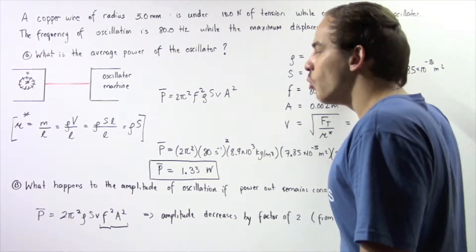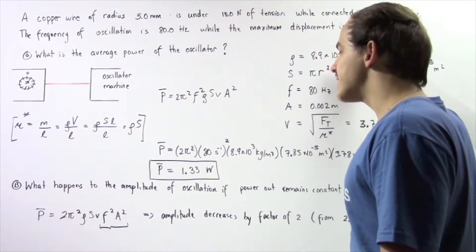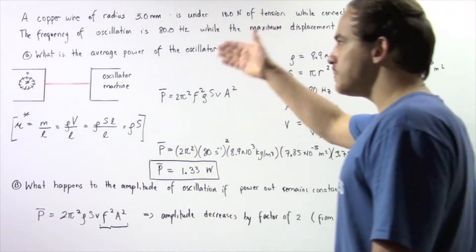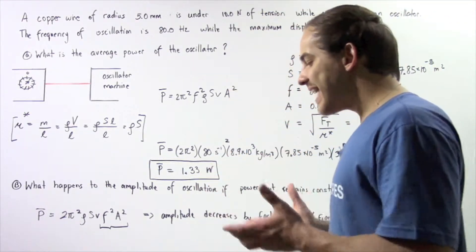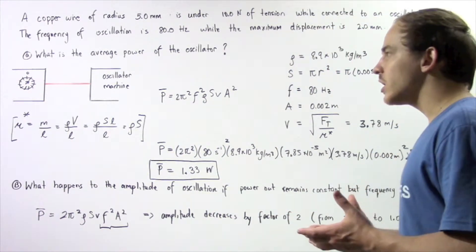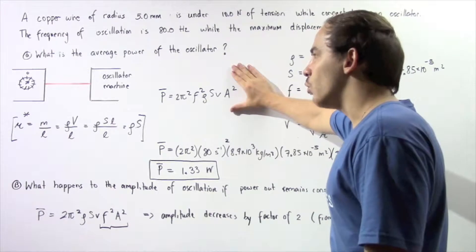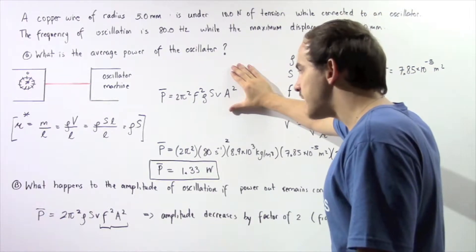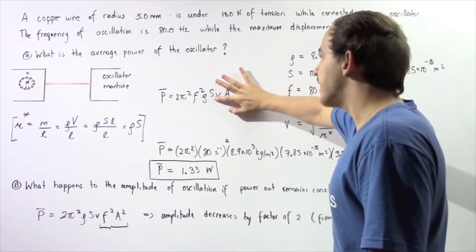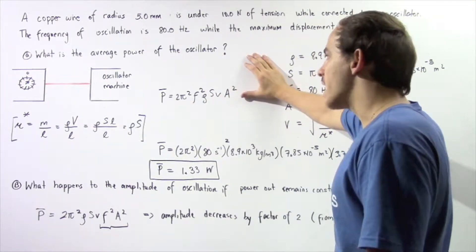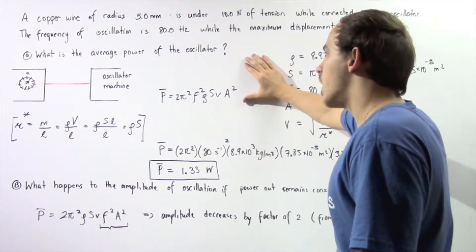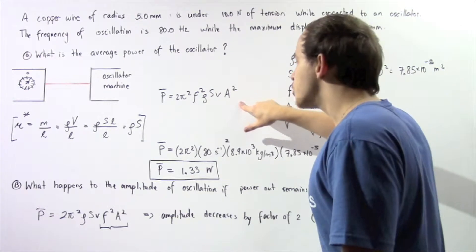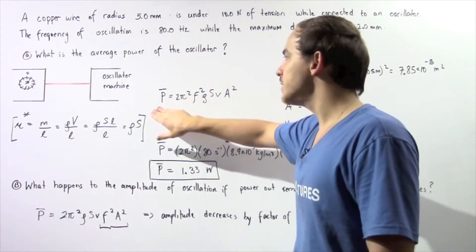In part B, we want to find what happens to the amplitude of oscillation if the power output remains constant but the frequency doubles. Let's begin with part A. The equation for the average power of an oscillator is: 2π² times frequency squared, times the density of the wire, times the cross-sectional area of the wire, times the velocity of the wave, multiplied by the amplitude squared. Notice we know every single one of these quantities, so we can determine the average power.